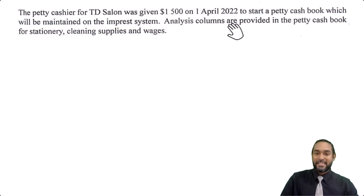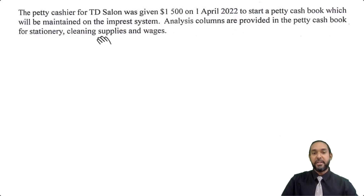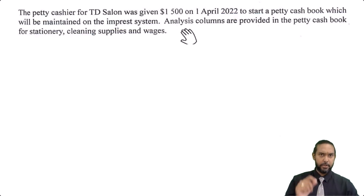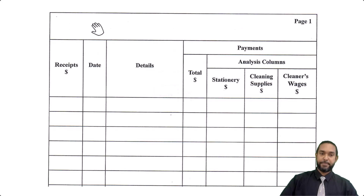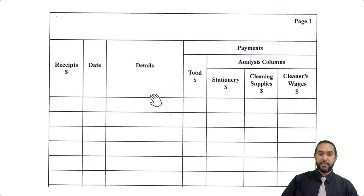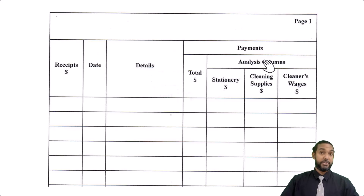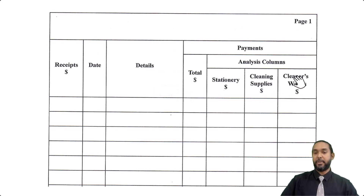The analysis columns provided in the petty cash book are for stationery, cleaning supplies, and wages. Taking a quick look at the petty cash book form: it has a receipts column, a date column, details, total, and then the analysis columns — stationery, cleaning supplies, and cleaner's wages.